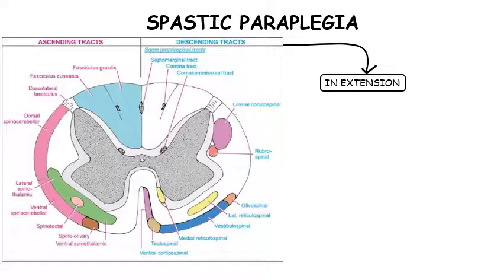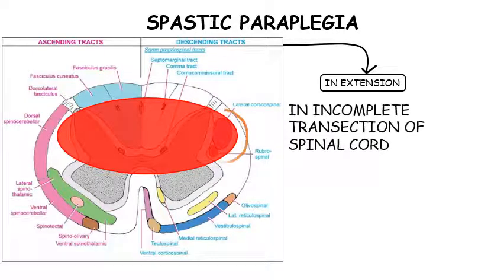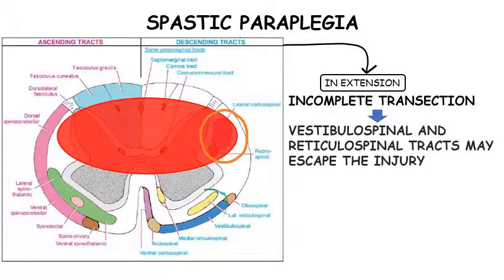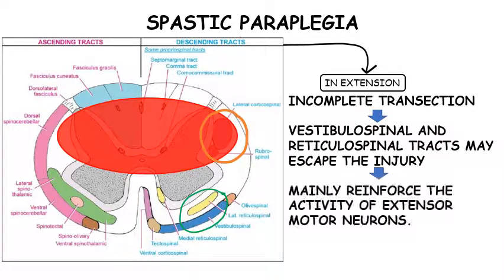Here is a cross section of the spinal cord showing both the ascending and descending tracts. We can identify the corticospinal tracts — the pyramidal tracts — as well as the extra-pyramidal pathways like vestibulospinal and reticulospinal tracts. In paraplegia in extension, only a part of the spinal cord gets affected, leading to damage of the corticospinal tracts. This is a relatively early change. In partial damage to the spinal cord, some of the descending fibers in the lateral column, especially the vestibulospinal and reticulospinal tracts, may be spared, so some connections persist between the brainstem and spinal cord. Fibers of the vestibulospinal and reticulospinal tracts mainly reinforce the activity of extensor motor neurons, hence we have extensor spasm of the lower limbs.